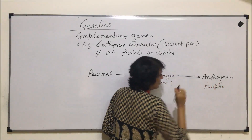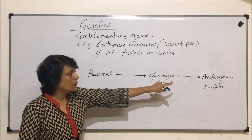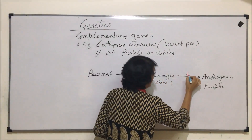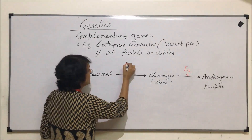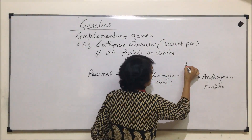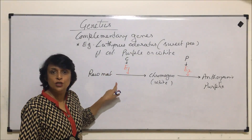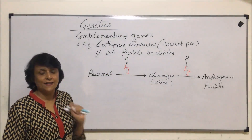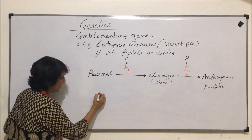For this reaction — from raw material to anthocyanin — we need two enzymes. Enzyme one is synthesized by a gene called C, and enzyme two is synthesized by a gene called P. That means unless both these genes are present in their dominant form, the enzymes will not be synthesized. These two genes are located on different loci.